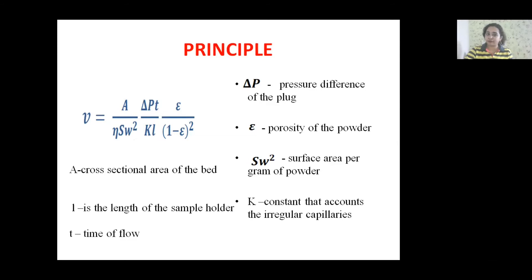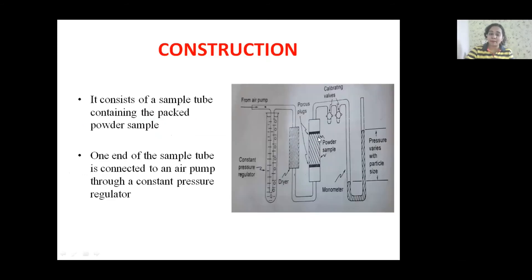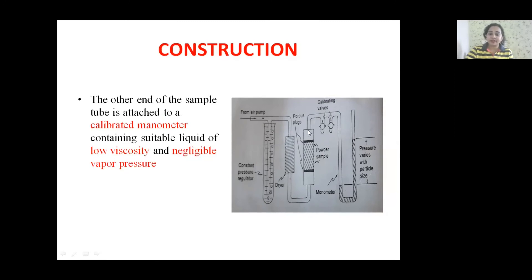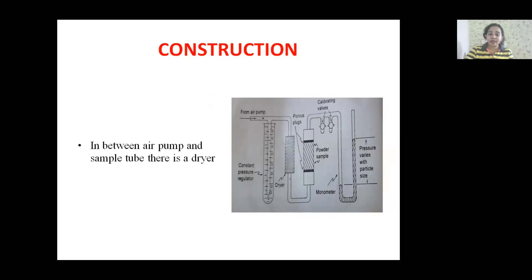Moving on to the construction of the Fischer Sub-Sieve Sizer instrument — it consists of a sample holder or sample tube in which the powder sample is packed. One end of the sample holder is connected to an air pump via a constant pressure regulator, and the other end is connected to a calibrated manometer containing a liquid of low viscosity and negligible vapor pressure. In between the air pump and sample holder, there is a dryer.